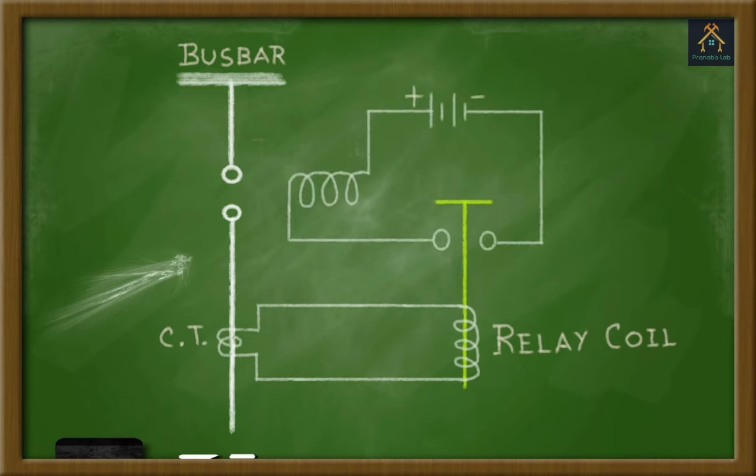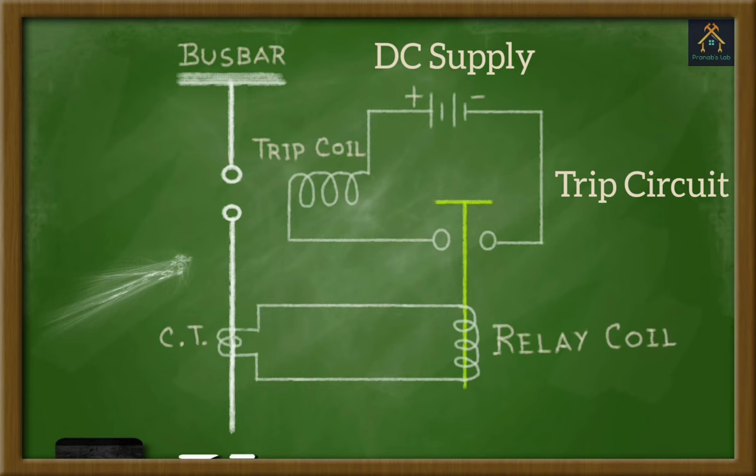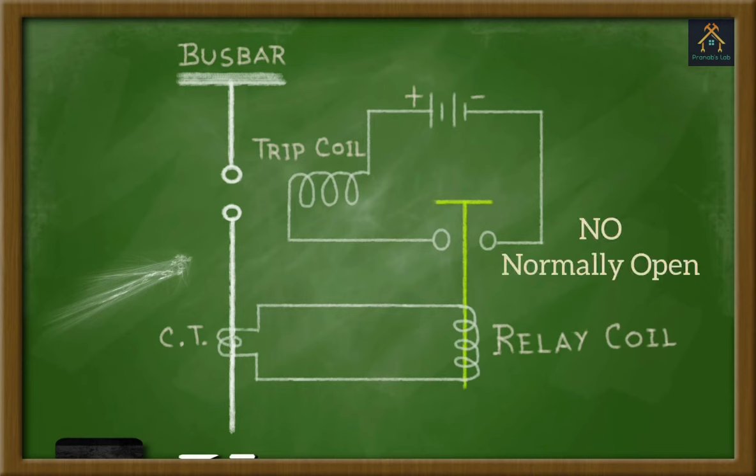Now, you can see a separate circuit is drawn just above the relay coil plunger. This circuit is called the trip circuit. The circuit contains a DC power supply from battery, a trip coil and two contacts. The contacts are placed just below the relay coil plunger. The trip circuit can be closed only by the relay coil plunger. Please remember that the trip circuit contacts are normally in open condition.